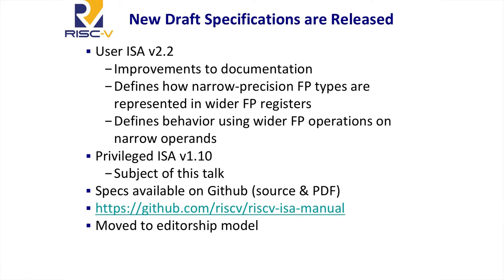Most of the changes to the User ISA spec are focused on improving the quality of the documentation itself. We froze the User ISA two years ago — the base ISA and the four standard extensions: M, A, F, and D. We did make one important change, which is closing a specification hole in the double-precision floating point instruction set. It was not well-defined how narrower floating point types were represented in wider floating point registers, or what happened when you used the wrong floating point operation on the wrong operand. Now, smaller floating point numbers are represented as NANs in the wider format, so operations fail exactly as expected rather than doing something implementation-defined.